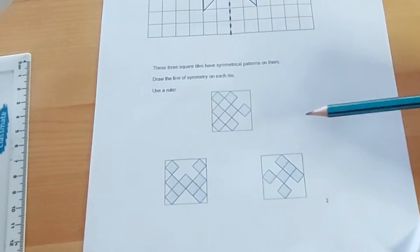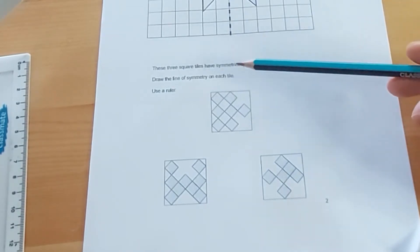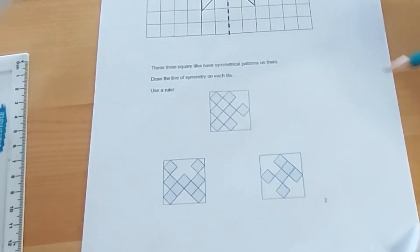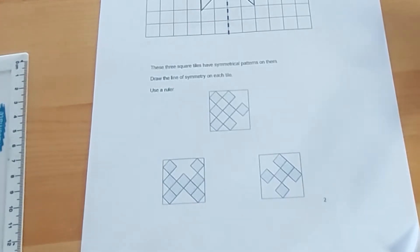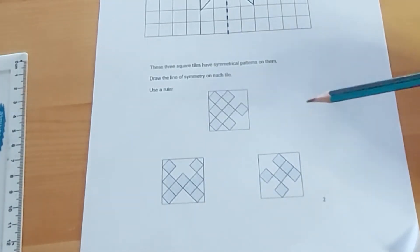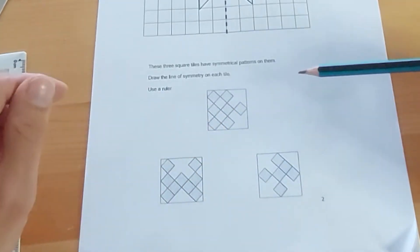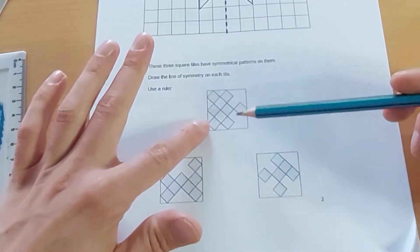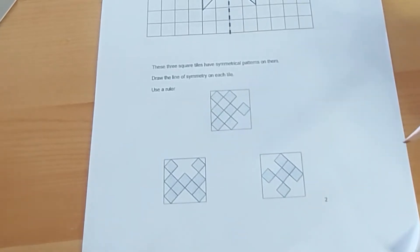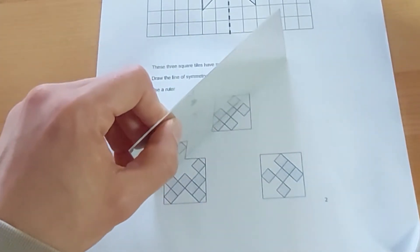Another symmetry question is like this one here. These three square tiles have symmetrical patterns on them. Draw the line of symmetry on each tile. So essentially there is a line of symmetry in each of these tiles where if we were to put the mirror down that line it would look exactly the same on both sides. So can we see lines of symmetry. So I'm going to start here.